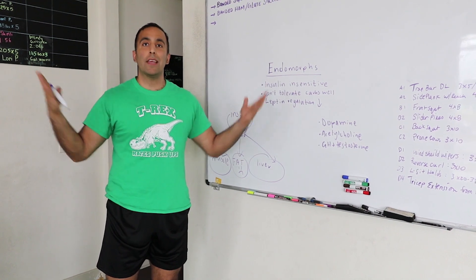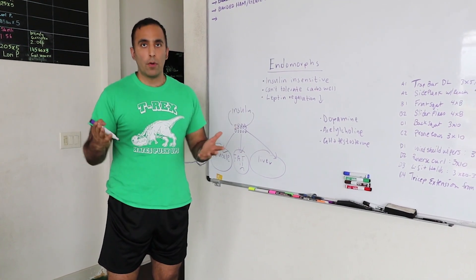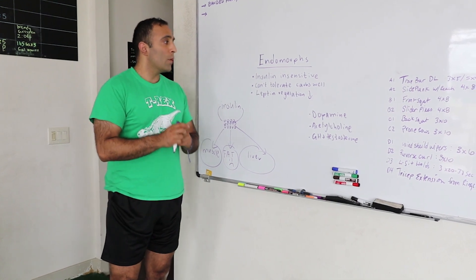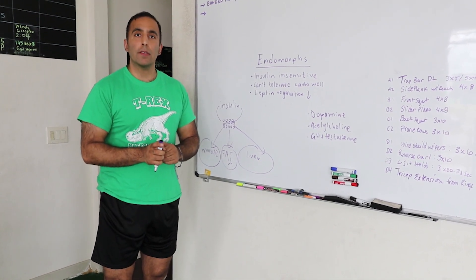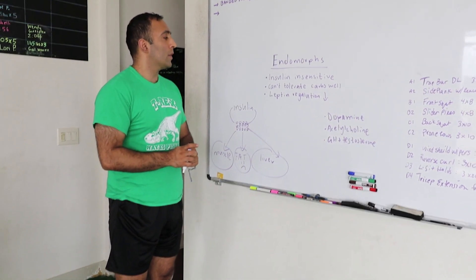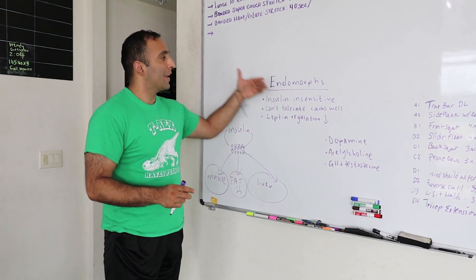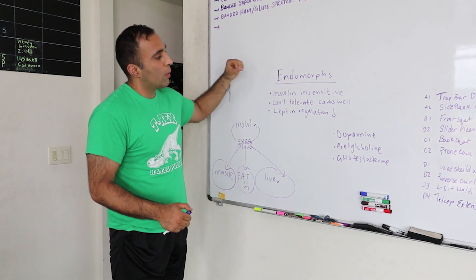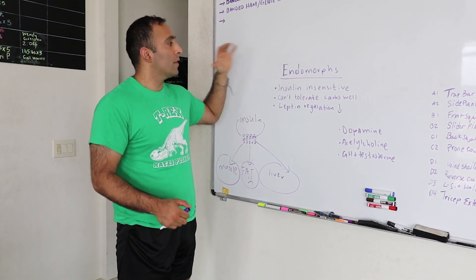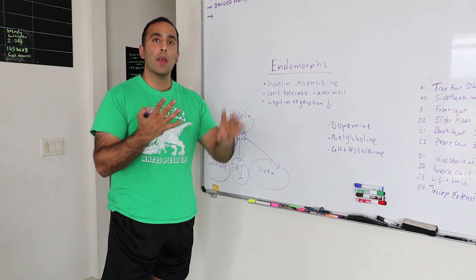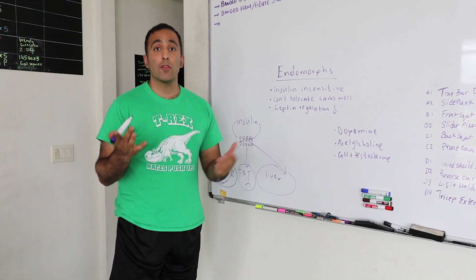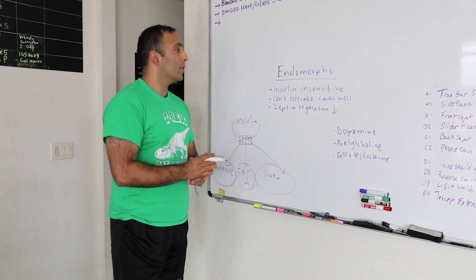Mesomorphs are athlete-built, very V-tapered people, football athletes, basketball athletes and so forth. With endomorphs, you have to understand a few things. Before we talk about the character traits of the endomorph, let's talk about what we're trying to achieve: the most optimal fat loss and muscle retention throughout this person's training career.